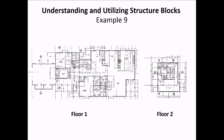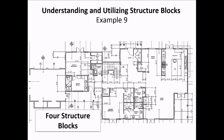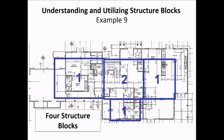Last example: this structure consists of a large first story with a small second story located only in the middle of the structure. For this one, it would be best to use four structure blocks — one structure block specified as two stories in the middle of the structure, then three one-story structure blocks specified around it. That way, after extending walls upwards, it will be easy to achieve the correct shape of the structure on the second story.